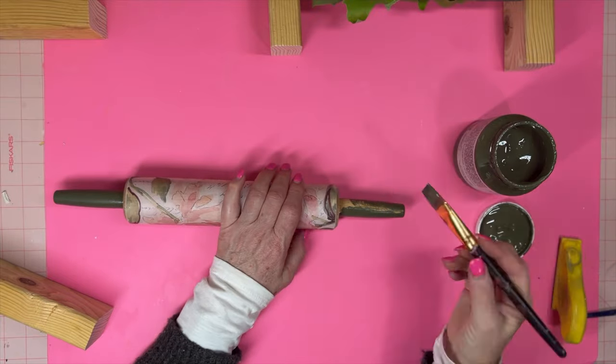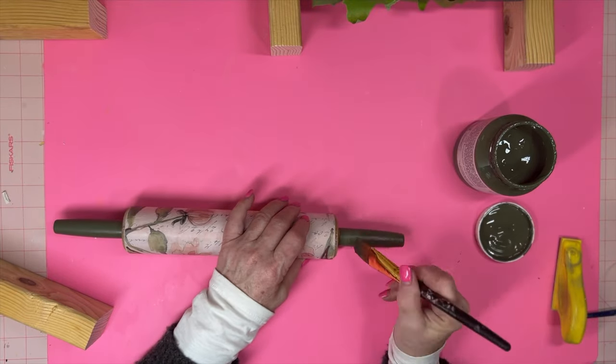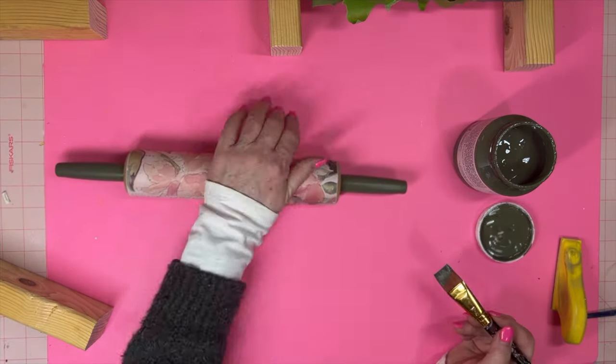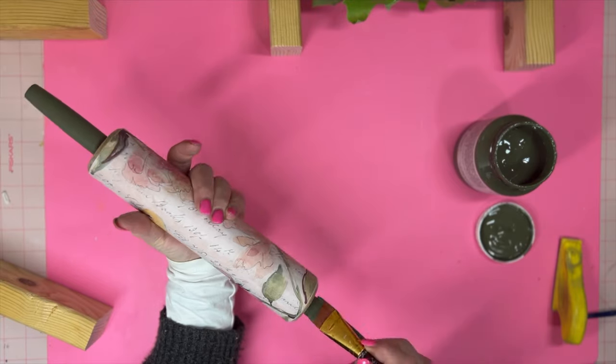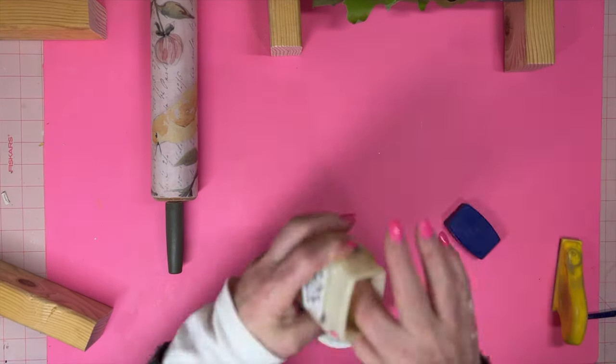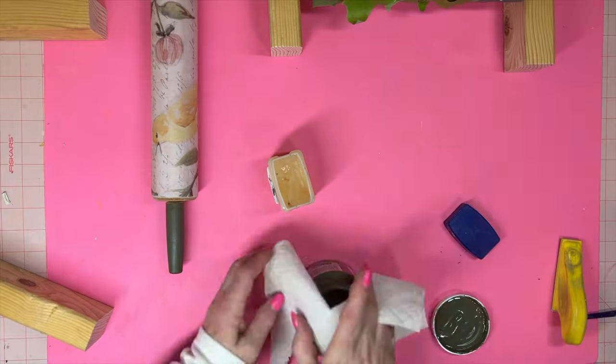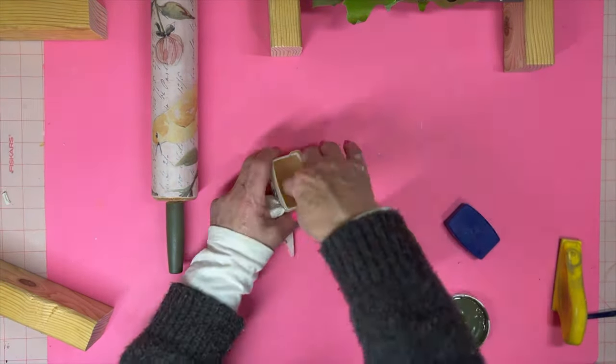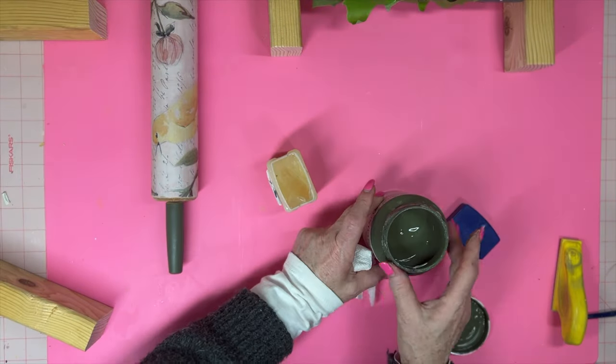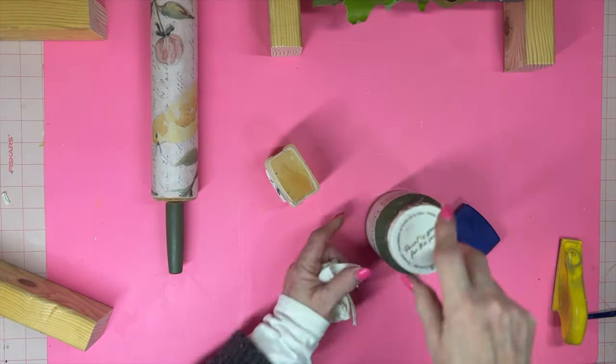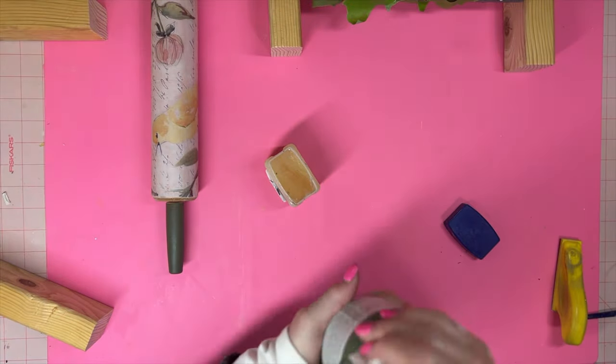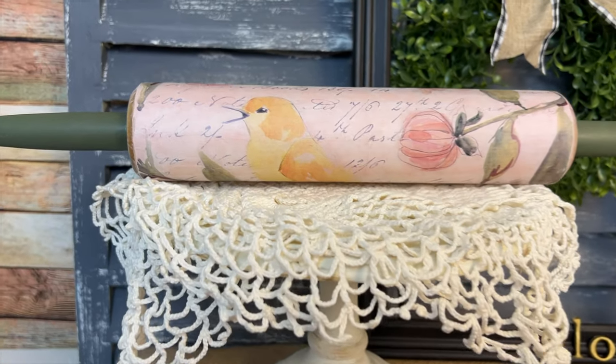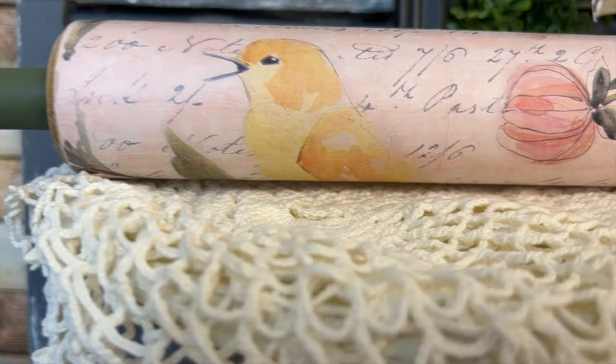And for the handles I am using Fusion Mineral Paint in the color Bayberry. I think it looks so nice with the decoupage paper. I cleaned off the edges and then I put Vaseline all around the top rim of the paint and hopefully next time I go to take that paint top off it'll come off a lot easier. And here's how rolling pin number three turned out.